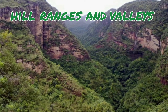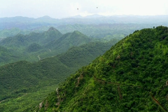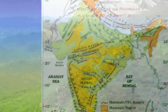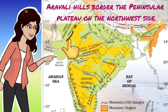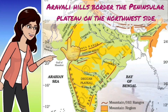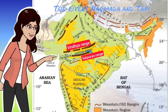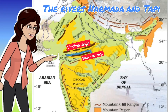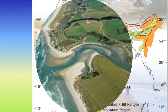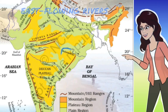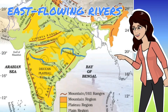Here you can find several hill ranges and valleys. For example, the Aravalli Hills, one of the oldest ranges of the world, border it on the northwest side. Other important ranges are the Vindhyas and the Satpuras. The rivers Narmada and Tapi flow through these ranges. These are west-flowing rivers that drain into the Arabian Sea.